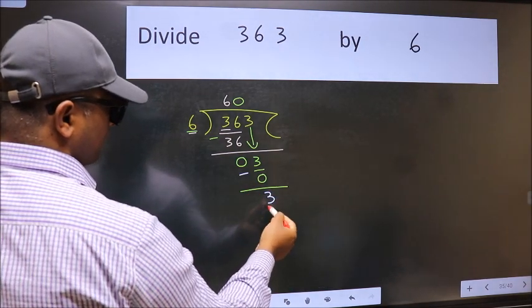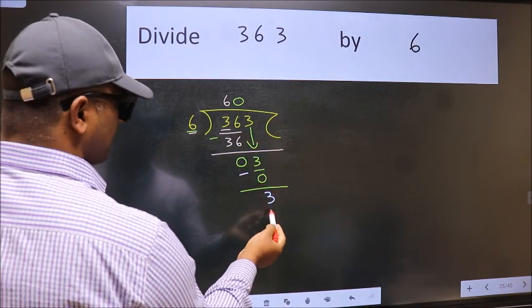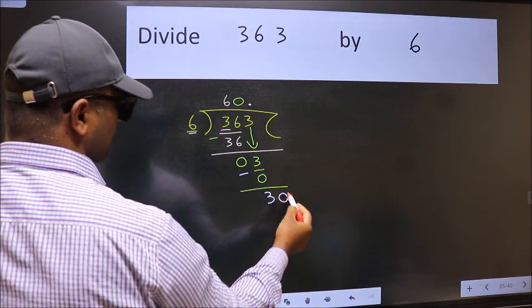Over here, we did not bring any number down and 3 is smaller than 6. So now we can put dot, take 0. So 30.